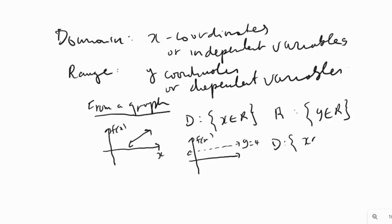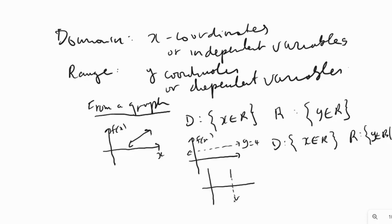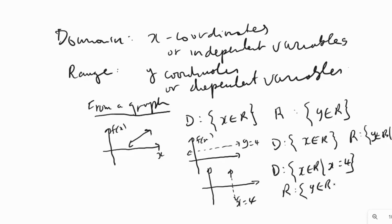For the horizontal line y = 4, the domain is x belongs to R, but the range is only y = 4 — just one value of y. For a vertical line like x = 4, the domain is only x = 4, while the range is all real numbers. So for all linear functions, domain and range are all real numbers, except for vertical or horizontal lines.